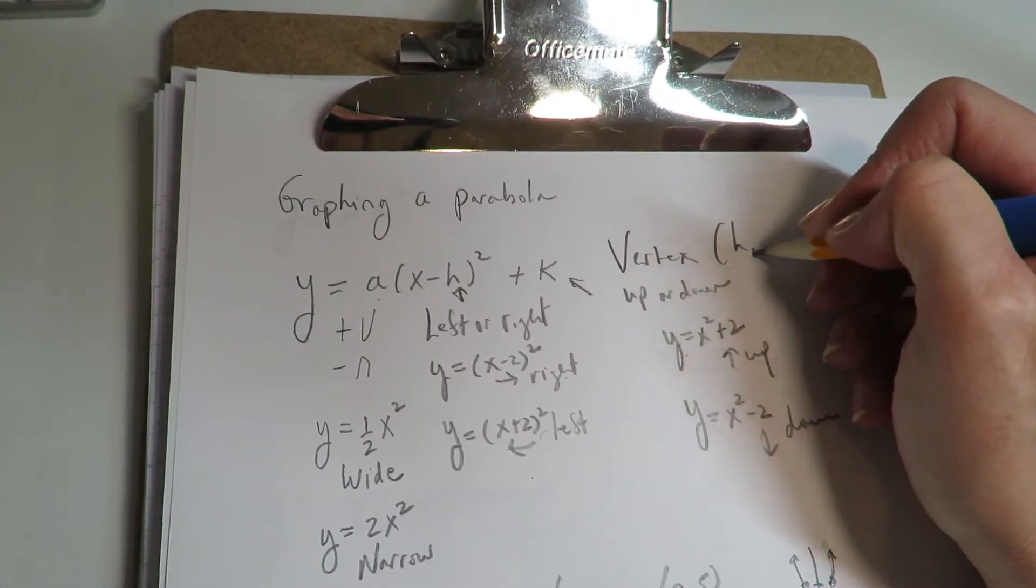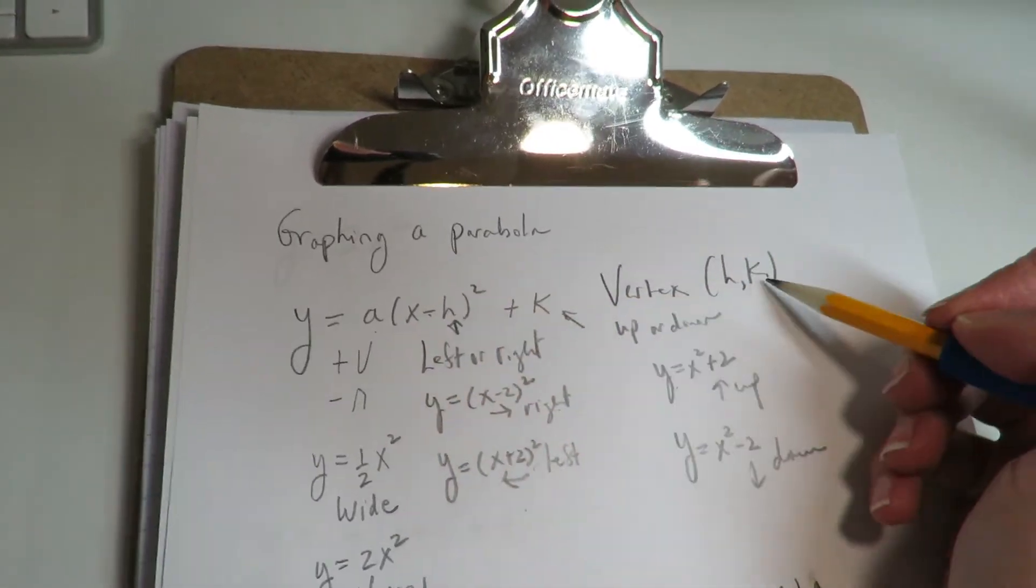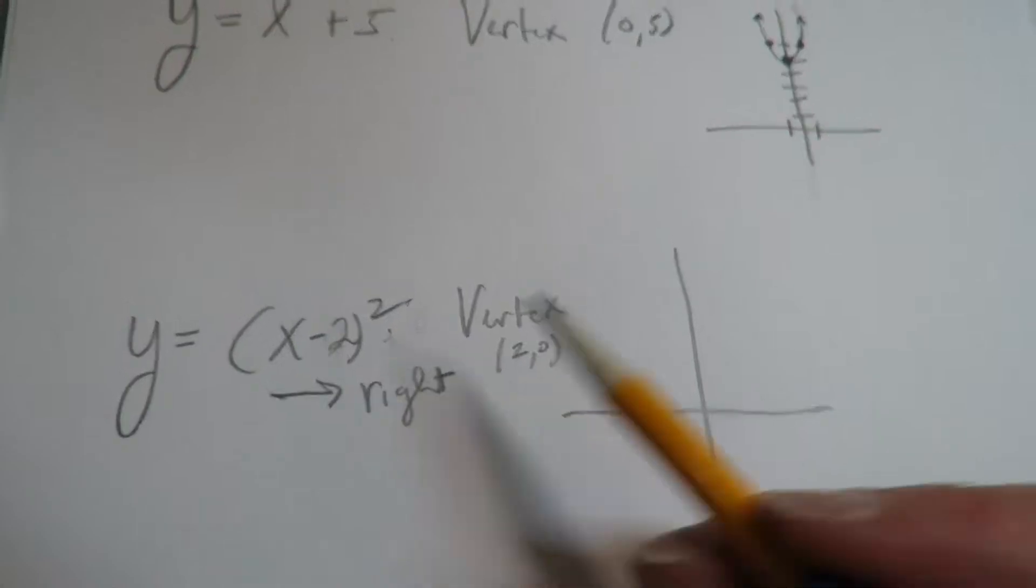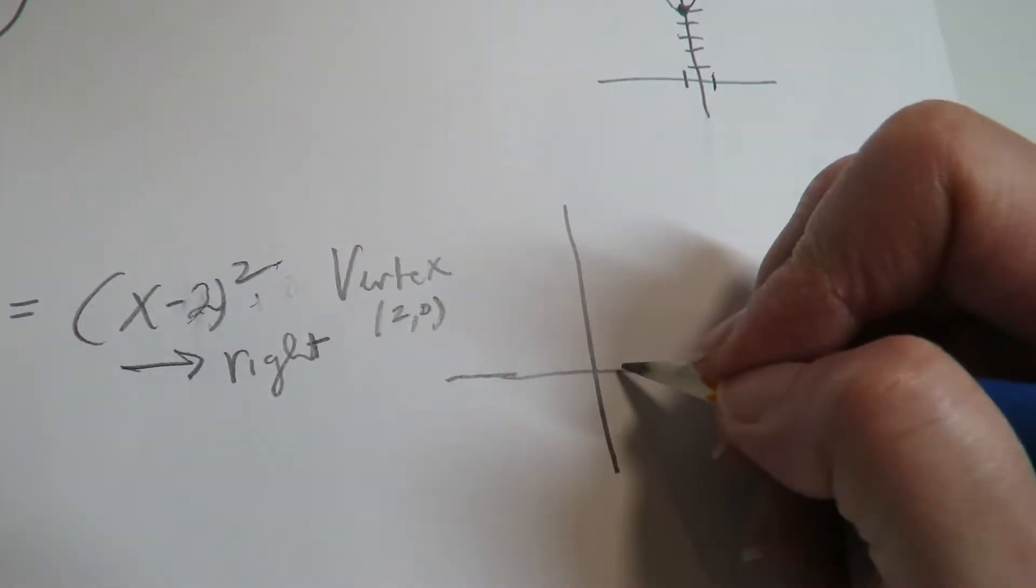Let me just be a little more clear up here. So the vertex is h, k. So it's the opposite of the inside, same as the outside. So opposite of the inside and the outside, there's nothing there, so it's 0.